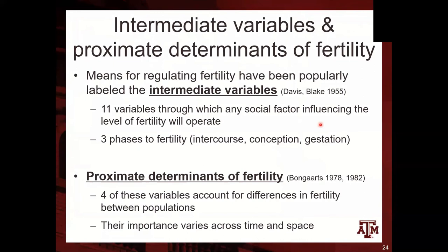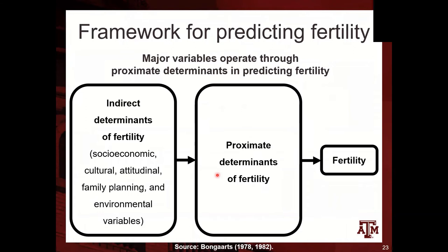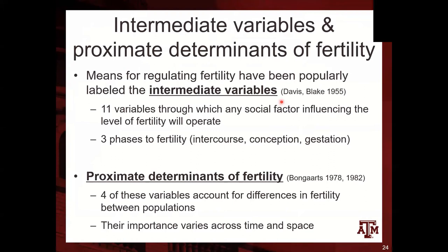This discussion of intermediate variables began with Davis and Blake in 1955. They tried to understand what intermediate variables are the means for regulating fertility — the intermediaries between indirect determinants and fertility. They proposed 11 variables through which any social effect on fertility would operate, divided into three major groups: one related to intercourse (sexual activity), one related to conception (contraceptive use), and one related to gestation (characteristics while pregnant).